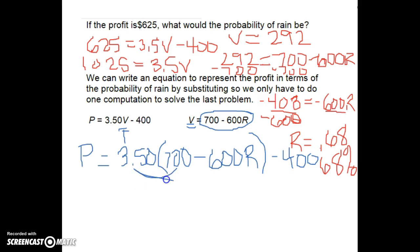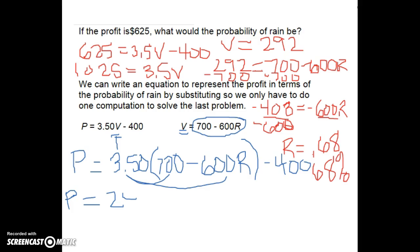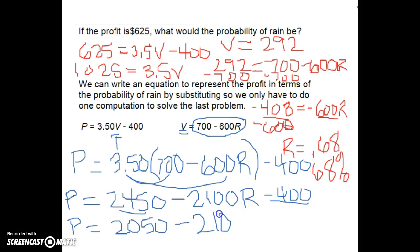Now I've got to use distributive property. So I'm going to take 3.50 times 700, and when I take 3.50 times 700 I get 2,450. Then I'm going to take the 3.50 times 600 and I get 2,100R. And now I still have that minus 400. So now if I work to combine like terms, I'm going to take 2,450 minus this 400, and I get 2,050 minus 2,100R.